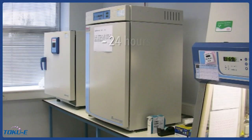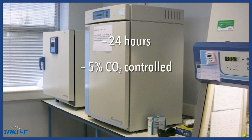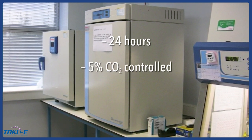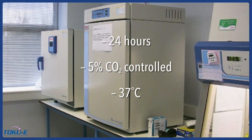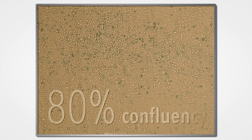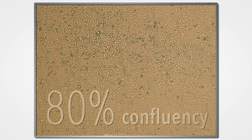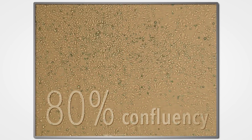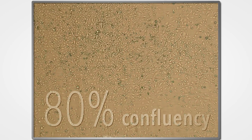Place the 24-well plate for 24 hours in a 5% CO2-controlled incubator at 37 degrees Celsius. After 24 hours of incubation, each of the three wells should appear to be 80% confluent. This cell density is ideal for transfection as the cells are in the proliferation stage and growing exponentially.